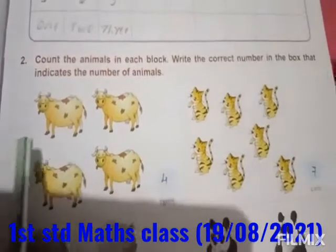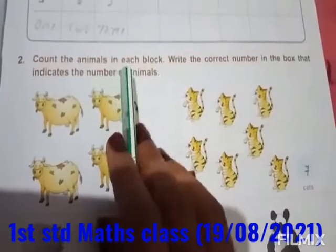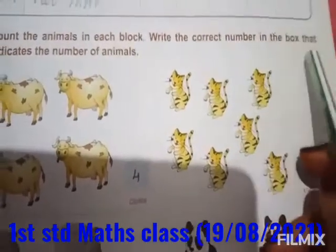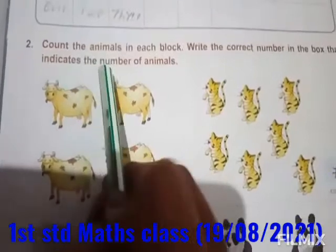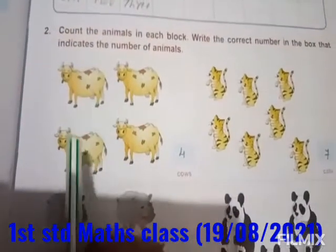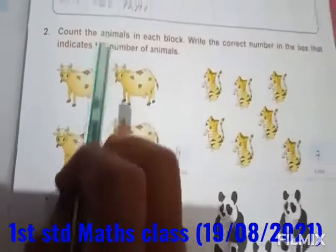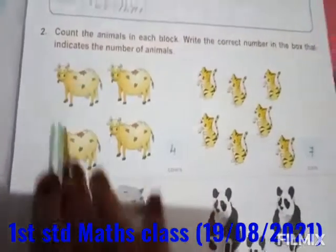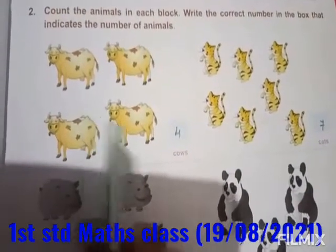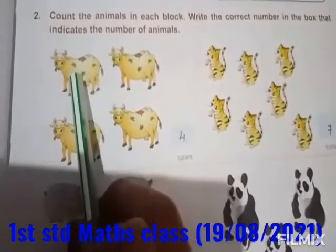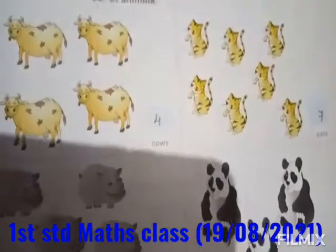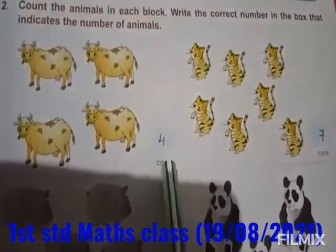Now, the second activity: Count the animals in each block. Write the correct number in the box that indicates the number of animals. You have to count the number of animals. In this, what is this animal? This is a cow. How many are there? 1, 2, 3, 4 — four cows.